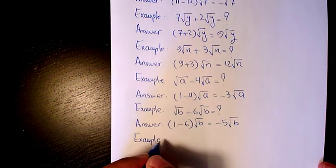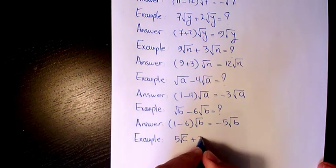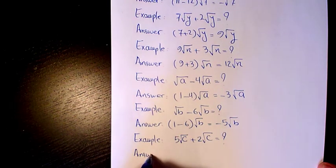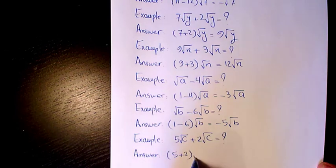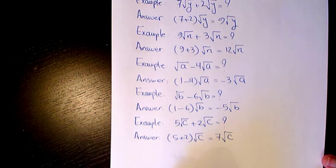Next example: 5 root c plus 2 root c. The answer is just collect the like terms, 5 plus 2 root c, or it's going to be 7 root c.